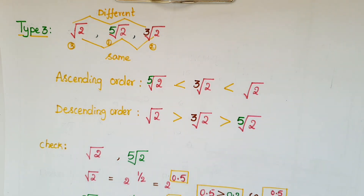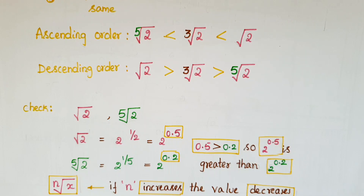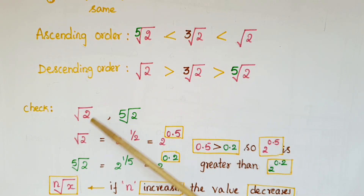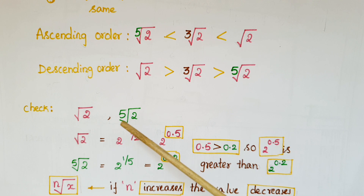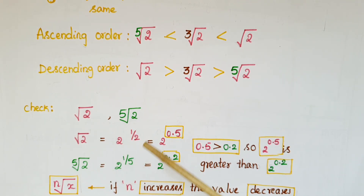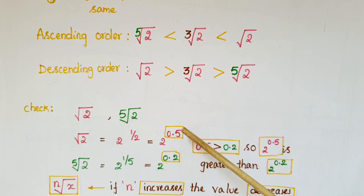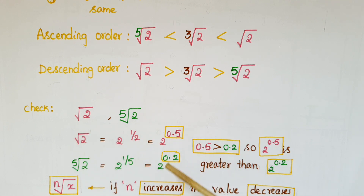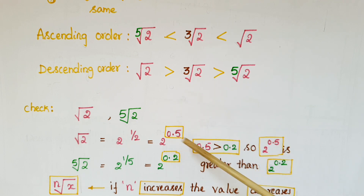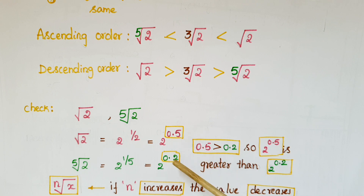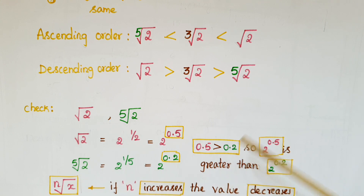For example, taking square root of 2 and fifth root of 2: square root of 2 is 2 to the power of 1/2, which equals 2 to the power of 0.5, and fifth root of 2 is 2 to the power of 1/5, which equals 2 to the power of 0.2. Since a higher power gives a greater value, 2 to the power of 0.5 is greater than 2 to the power of 0.2. So for the nth root of x, if n increases the value decreases.